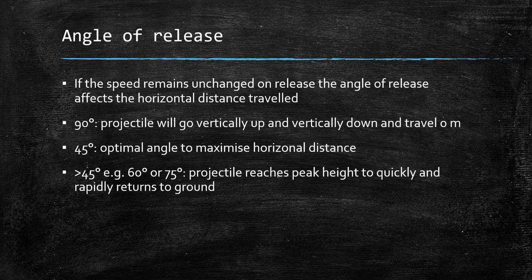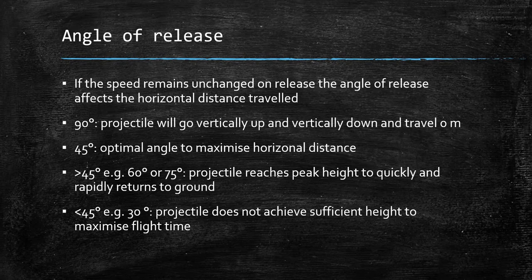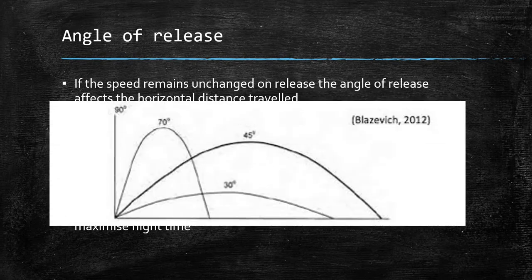Greater than 45 degrees but less than 90 degrees — so 60 or 75 degrees — a projectile will reach its peak height far too quickly and then rapidly return to ground. Whereas lower than 45 degrees, a projectile doesn't achieve sufficient height to maximise flight time, so it doesn't travel as far. As shown in the diagram, at 90 degrees it just goes up and down; too high and it reaches its peak too soon; 45 degrees is the magic angle; and at 30 degrees there's not enough height to get anywhere.